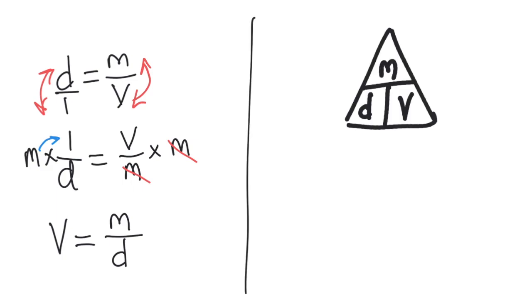Here's another method. I can use this triangle tool to help solve for the unknown. What you do with this tool is that you cover up the variable that you want to solve for. In this case, it's the v. And then the tool will tell you how to find it. With the v covered, it shows the m over the d. When variables are over each other like this, it means to divide them. So v equals m over d.